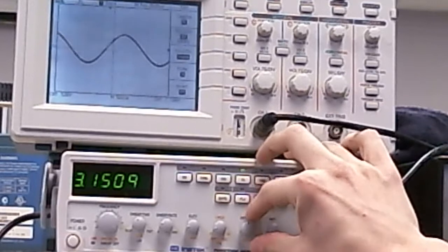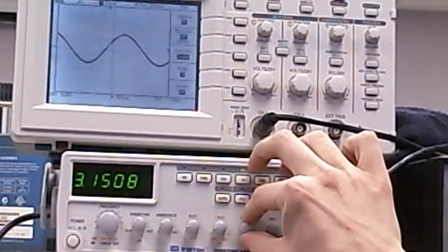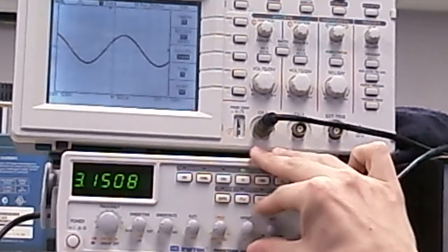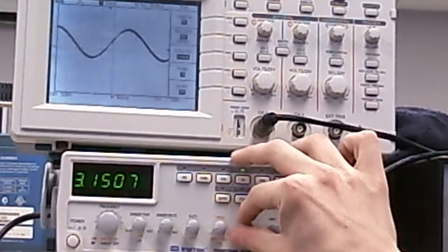The knob second from the right changes the DC offset, but only if it's pulled out. You must pull out the knob before changing the offset, and then you can move it wherever you want.